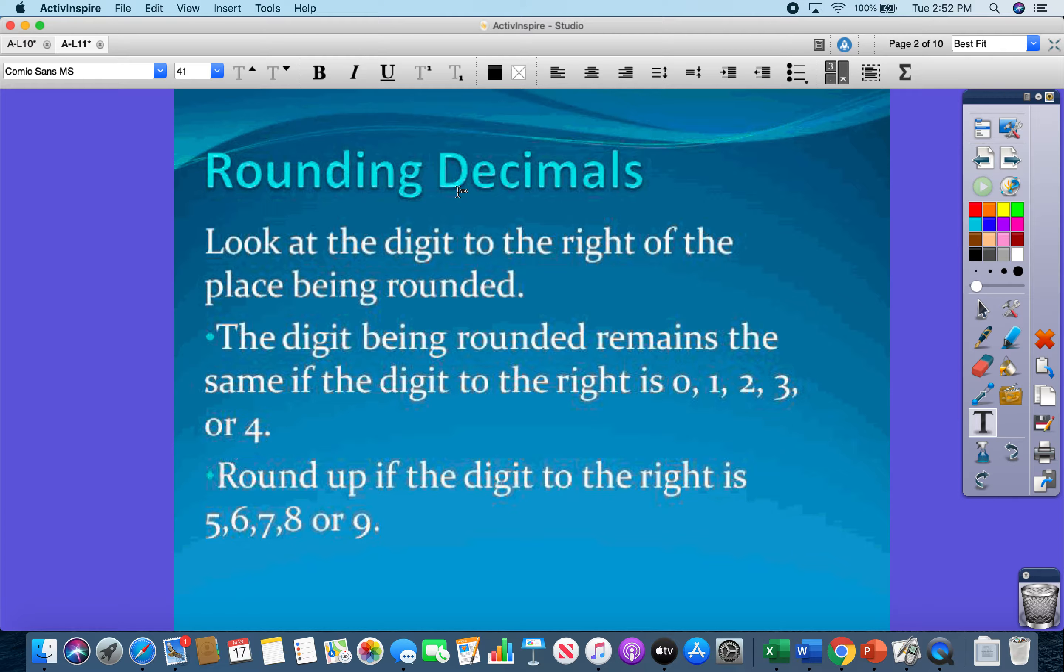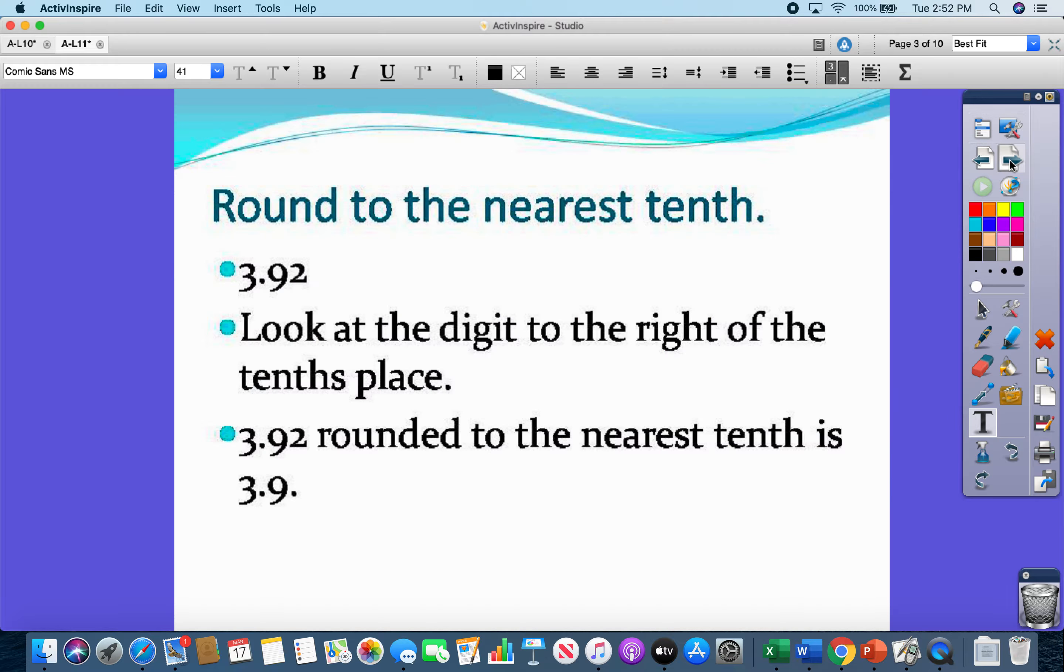The digit being rounded remains the same if the digit to the right is 0, 1, 2, 3, or 4. Round up if the digit to the right is 5, 6, 7, 8, or 9. Okay, sounds like gibberish, but let's check it out.